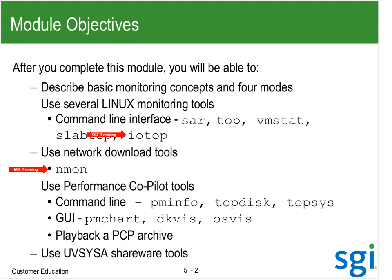There's also a command called nmon that I download from the web — it comes from IBM. The main reason I like it is for the disk farm capability. I'll explain that when I get to it. I also want you to be used to using PMChart and PCP — PMInfo to get the statistics. Two things in the PCP RPMs right now are top disk and top sys; they might get moved. Those are in the PCP-SGI RPM.